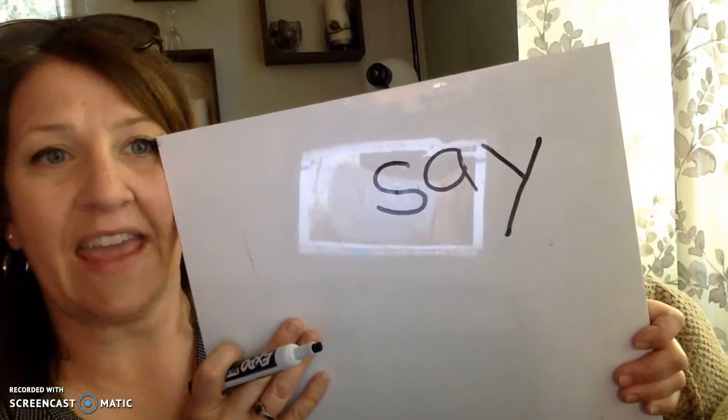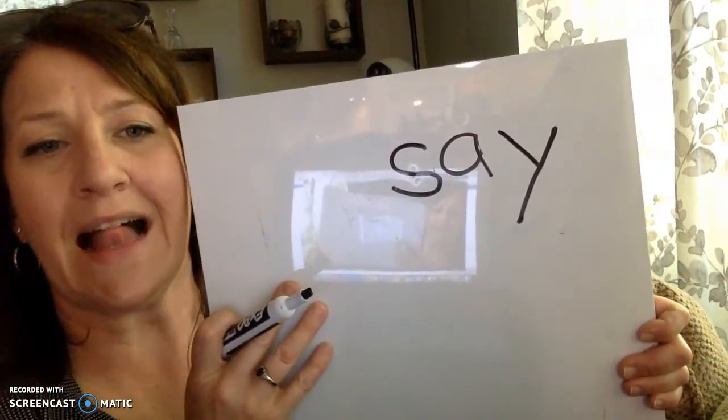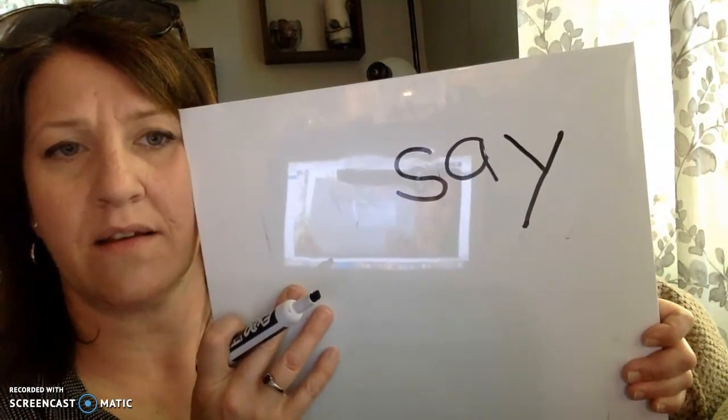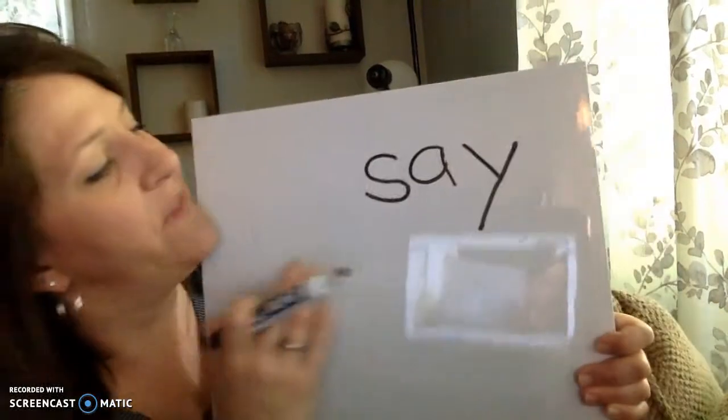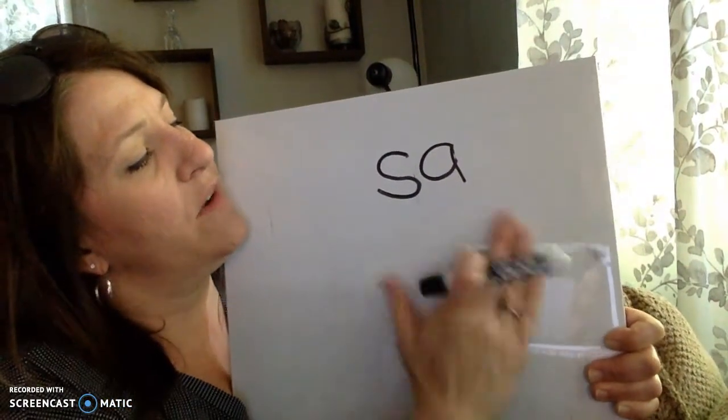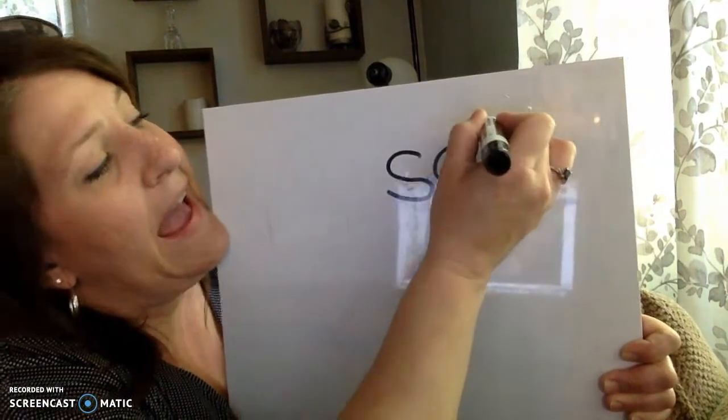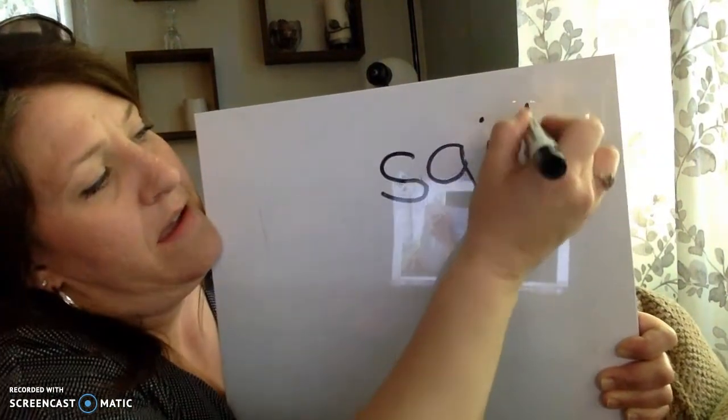Let's change say into sail. Sail. Where's the A? Is it at the end or in the middle? Sail. In the middle. In the middle. So we're going to have to get rid of that Y. Get back to A-I. And we've got sail.